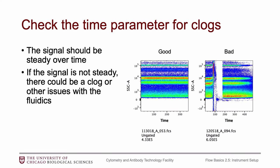Since we're talking about flow rate, also check the time parameter on your samples. Across time on any parameter, you'd expect the signal to be very stable. Check your samples and make sure you have a stable signal over time. If you see any sort of instability — like a dramatic interruption and recovery — that could indicate fluidics issues, probably a clog in the sample that pushed through on its own. Sometimes you'll just see a small blip, but if anything doesn't look steady on the time parameter, you probably had some fluidics issues.